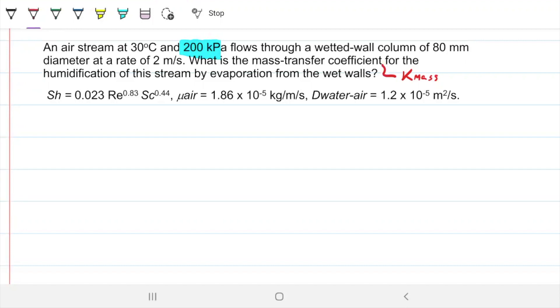Note that they're given us a correlation already, so they're giving us a correlation that applies for this situation. They also give us the dynamic viscosity for air and the diffusivity for water and air. So the first thing I'm going to do is I'm going to draw a wet wall because you probably don't know what this is.